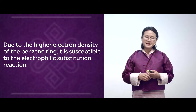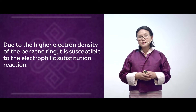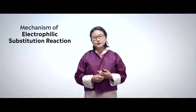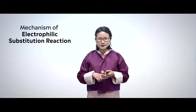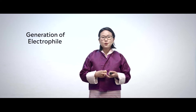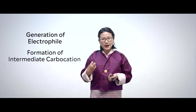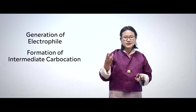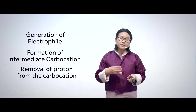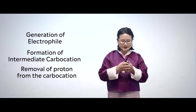Let's have a look at the mechanism of electrophilic substitution reaction. There are three steps involved. The first one is generation of electrophile. The second one is formation of carbocation. And the third one is removal of a proton from the carbocation. We are going to look at these steps one by one with an example.